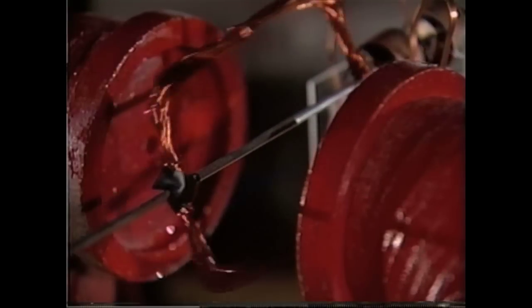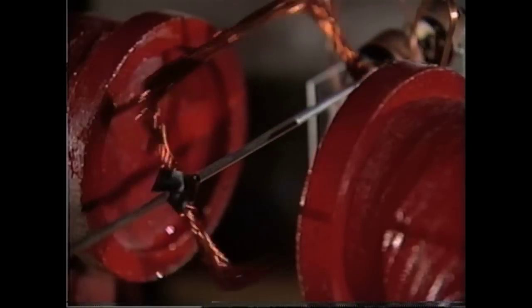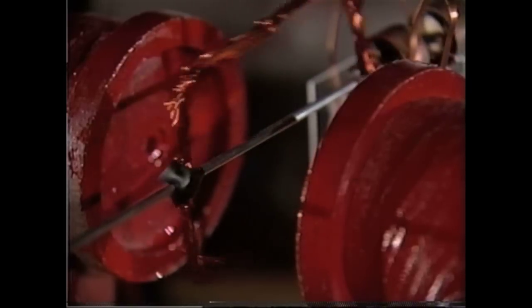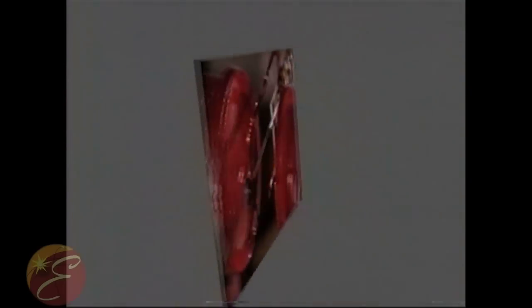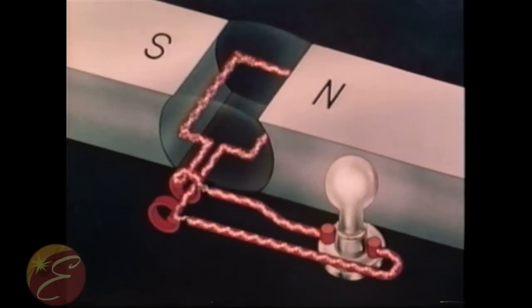We need only keep the coil rotating in the magnetic field to continuously induce electric voltage and current. But current produced in this fashion has an interesting feature. It is alternating.